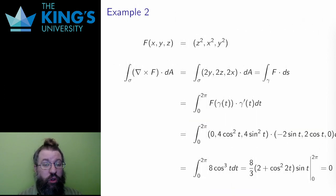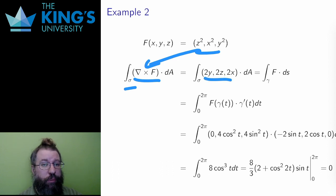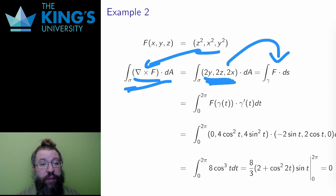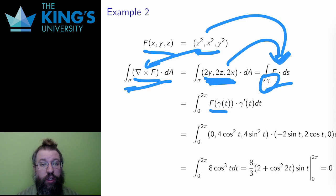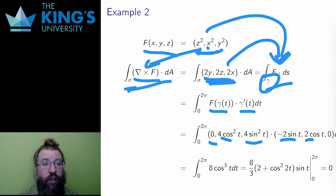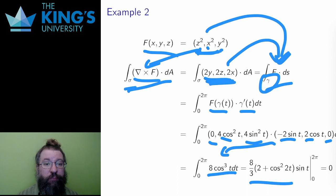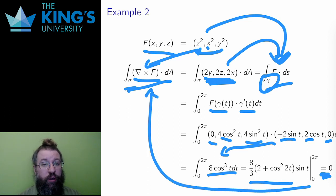Say I am starting with a flux integral over the paraboloid of the field (2y, 2z, 2x). I know that field is the curl of capital F. Therefore, the flux integral on the right side is the right side of Stokes. I can turn it into the left side of Stokes — the line integral of the original field over the boundary circle. Then I do the line integral: f of gamma is the field evaluated on the curve, replacing x with 2cos(t), y with 2sin(t), and z = 0. The derivatives of the curve are (−2sin(t), 2cos(t), 0). I take the dot product and integrate from 0 to 2π, and the result is 0. Since the line integral is 0, the original flux integral of the curl was also 0.